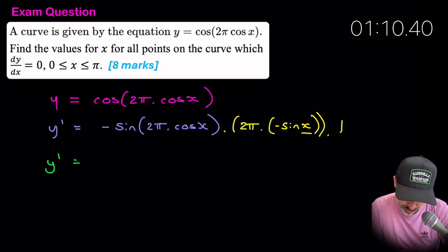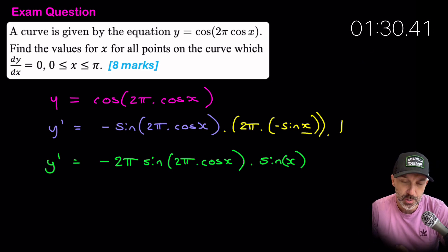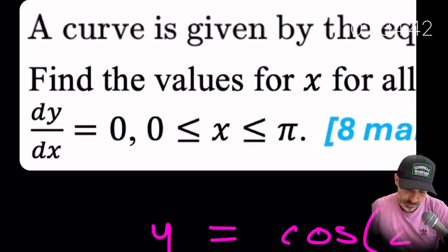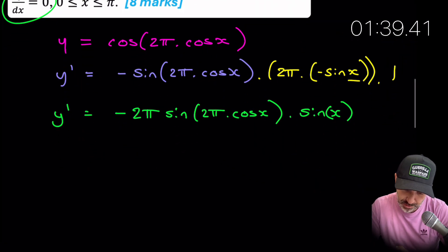And times by the derivative of this thing here, but that's just one. So I'm just going to put it down just so you don't forget that that's what you need to do in case it wasn't just x on its own. Okay, so we have this expression, let's tidy it up. We have y prime is equal to negative 2π sine 2π cos x times by sine x.